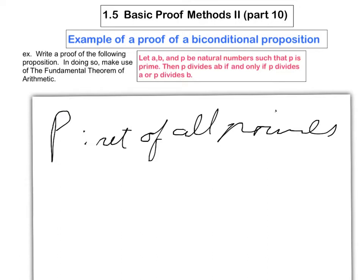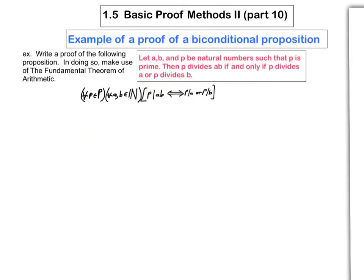So what we'll do is introduce a new universal set, namely the set of all primes. Let's define capital P to denote the set of all primes. When you're quantifying the fact that p is a prime, you'll put 'for all p in capital P.' Here's the statement written in symbols: for all primes p, and for all natural numbers a and b, p divides the product ab if and only if either p divides a or p divides b.